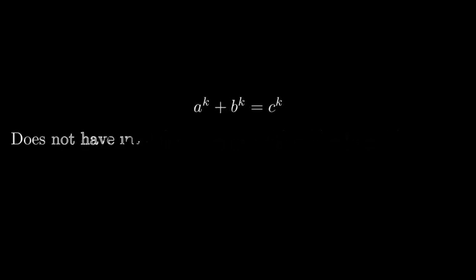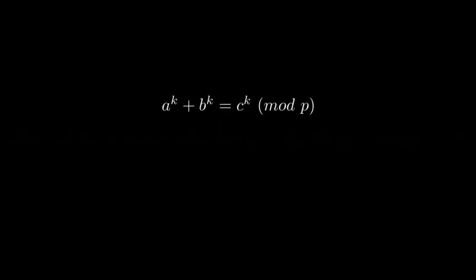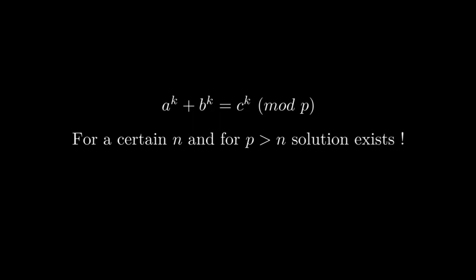Now can this method be used to prove Fermat's last theorem for some k using some modulo p? The answer is no, we can't. It's a fun fact that for any natural number k, there exists a natural number n such that there exists natural number solutions for this equation modulo p where p is a prime greater than n.